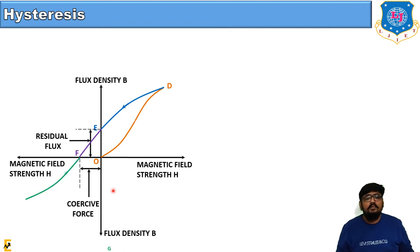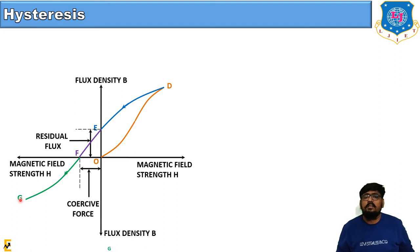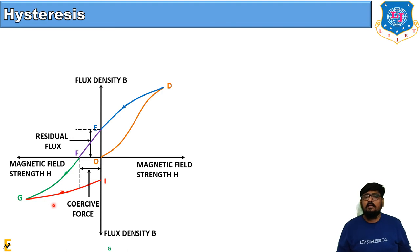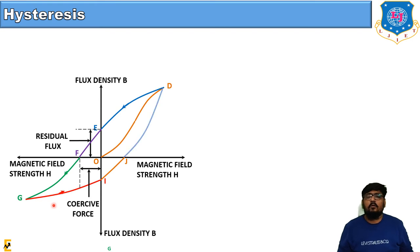Further decreasing the field takes the curve to point G, where similarly with the decrease in magnetic field strength the magnetic flux density decreases. From point G, if we increase the magnetic field strength, it follows the path G to I as shown by the red line, where with the increase in magnetic field strength the magnetic flux density increases.